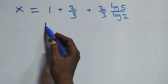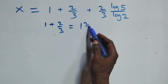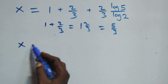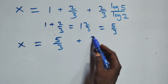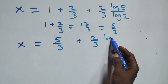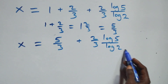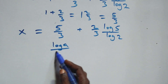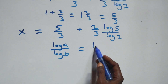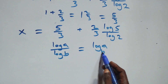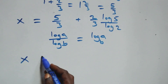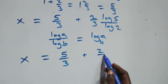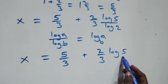Here we can express 1 plus 2 over 3 as a single number: 5 over 3. Then applying the change of base rule — log a over log b is the same as log a to base b — what we have becomes x equals to 5 over 3 plus 2 over 3 times log 5 to base 2.